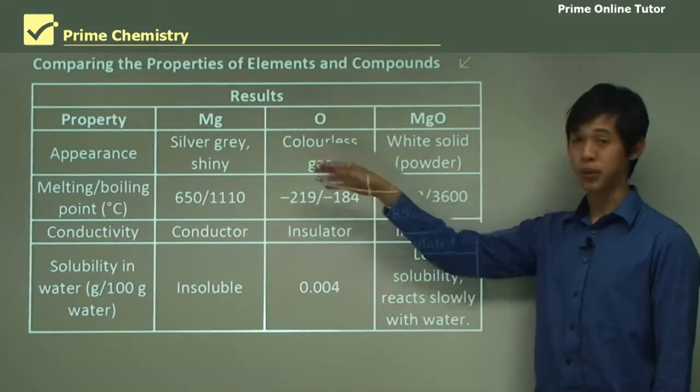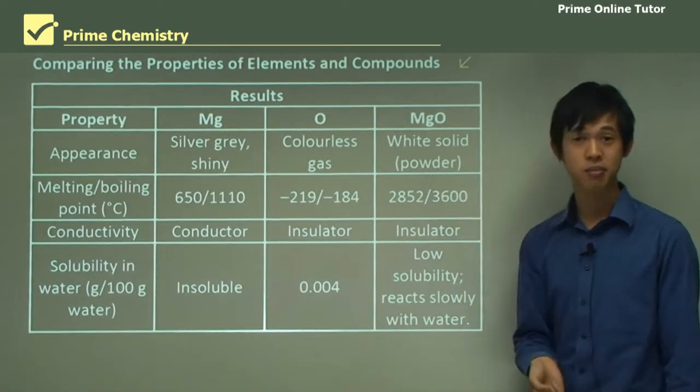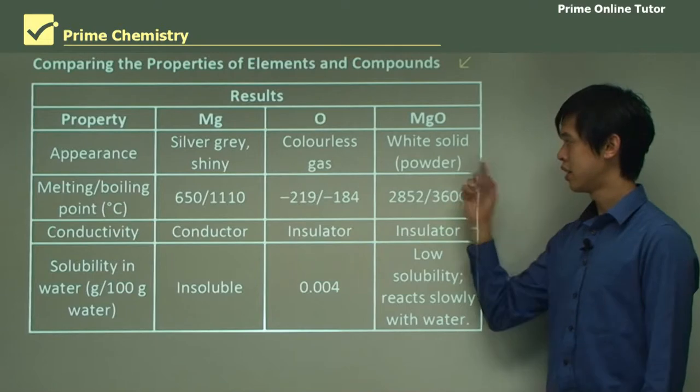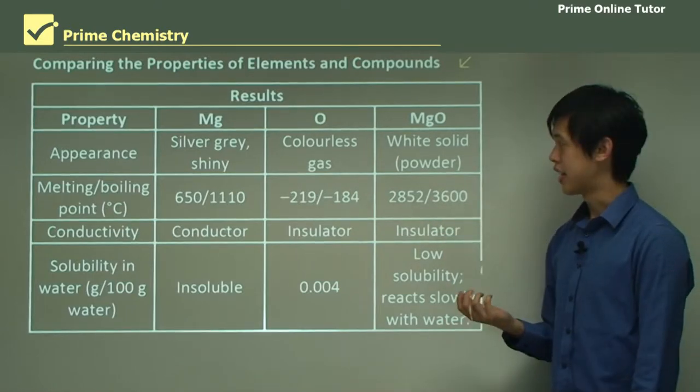And what we notice, what comes out, is actually a white powder. So the magnesium oxide, which is magnesium bonded with oxygen, is a white solid and it's a white powder.